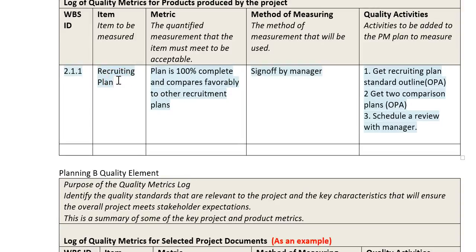We need to put together a plan for recruiting. In the scope, time, and other areas, we figured out how many people that would take, how much time it would take, and how long the duration would be on those activities. But here we're really talking about how do we make sure that we're successful — that the recruiting plan we actually get is a good one. That's what quality is all about.